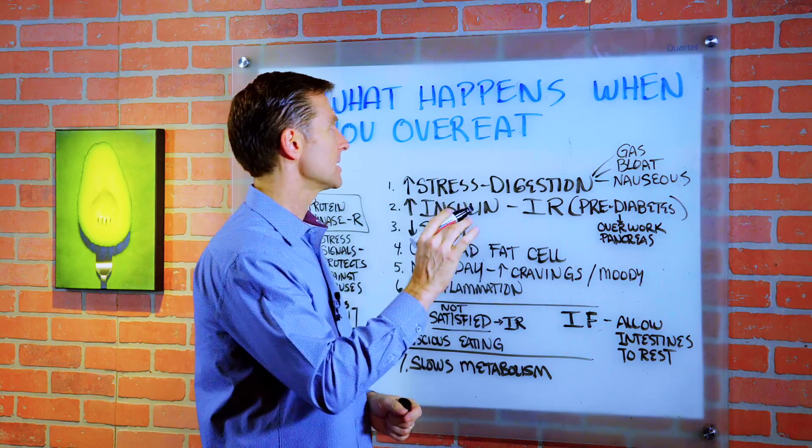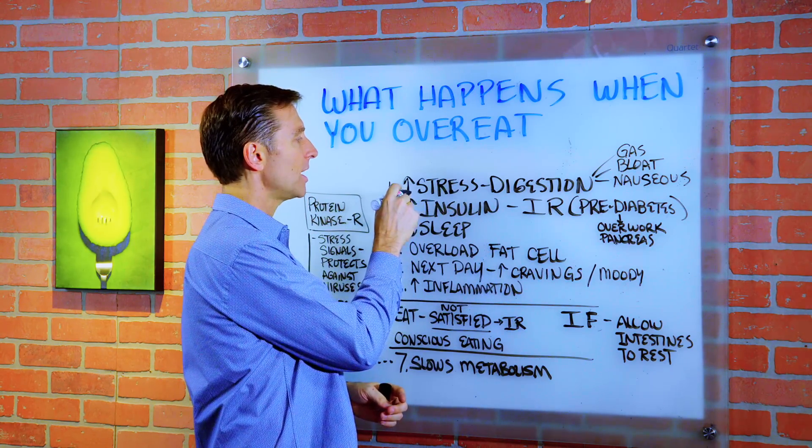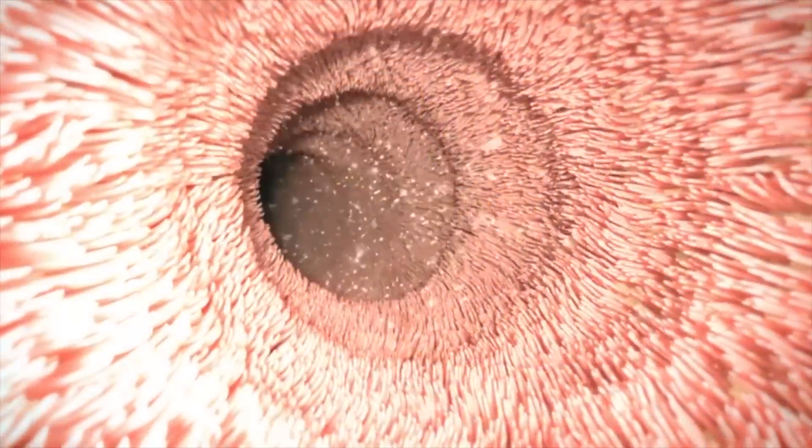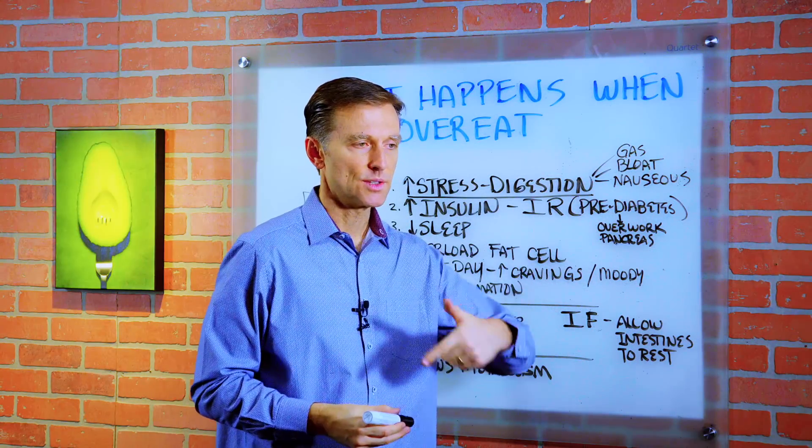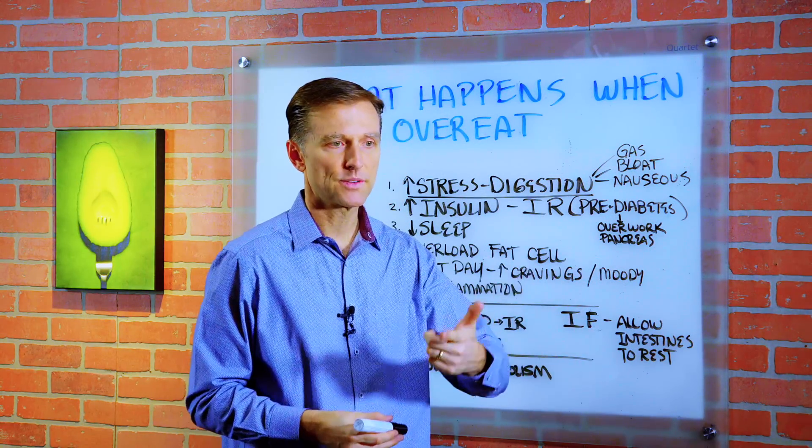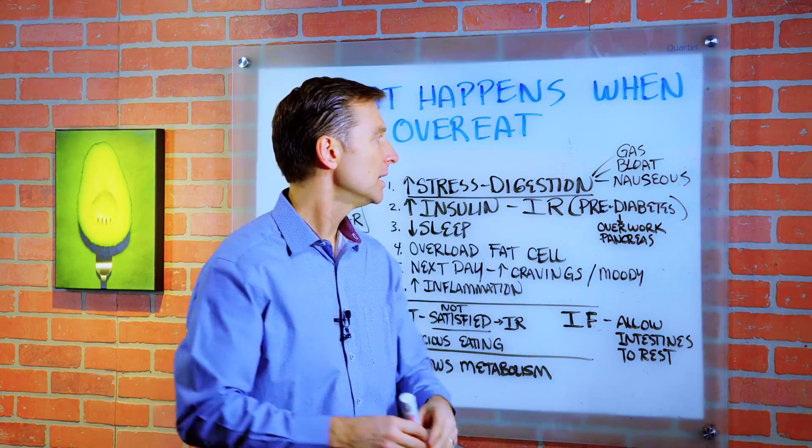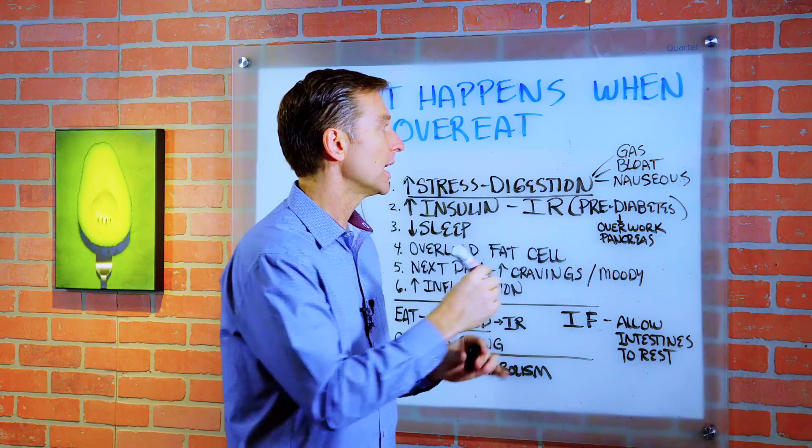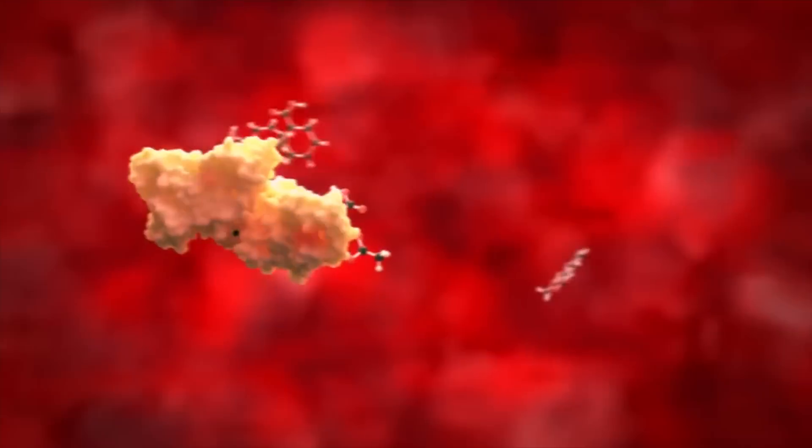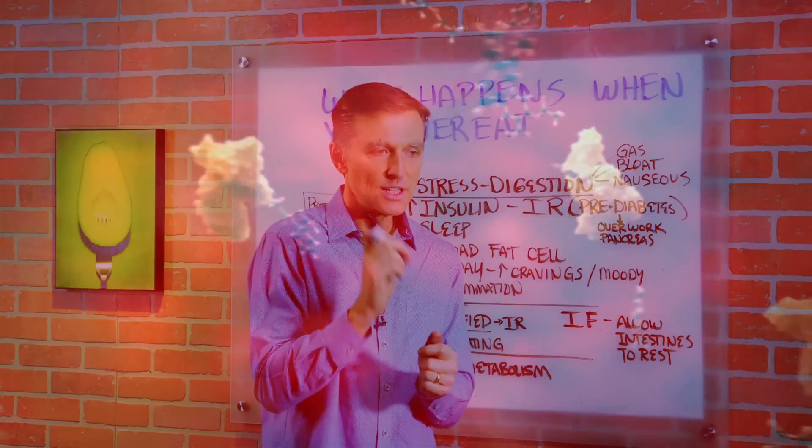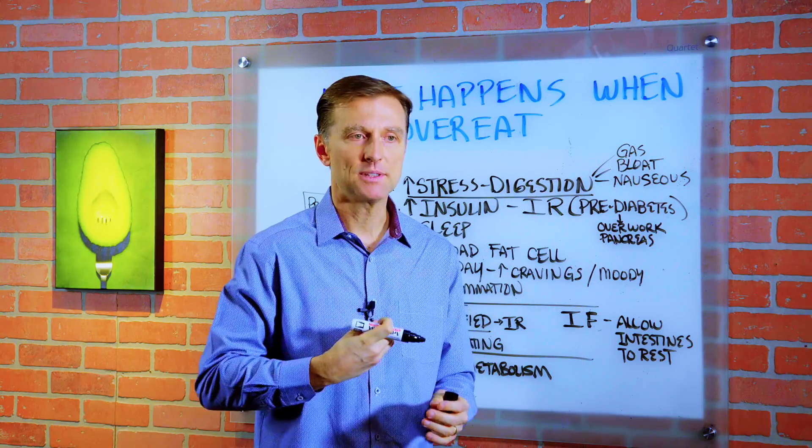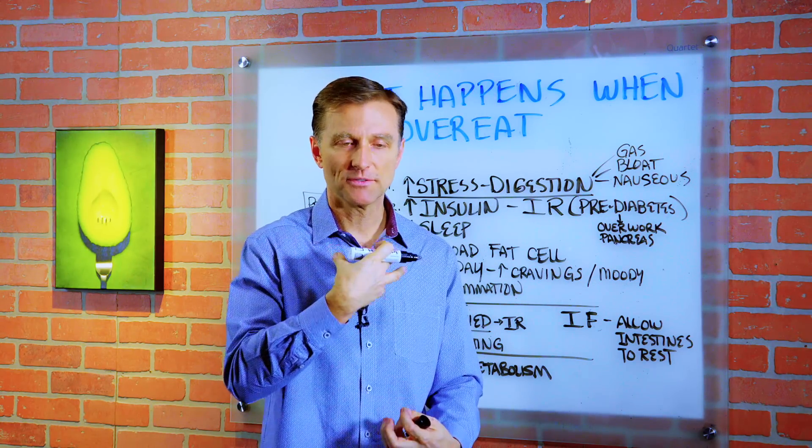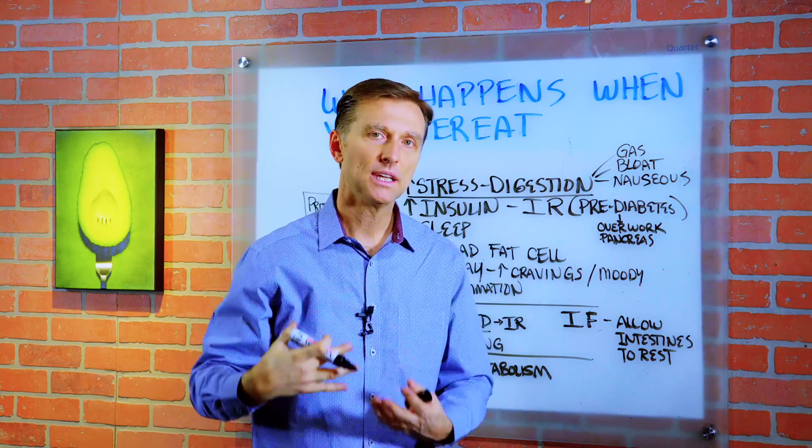So let's take a look at some of the things that can happen when you overeat. Number one, you're just stressing your digestive system in general. You have all these different processes that are occurring with the stomach, the gallbladder, the pancreas, the small intestine, the large bowel, a lot of hormone things going on. And a lot of these processes are never completed. It's always incomplete because there's never a time where that pipe is empty. It's always full. There's always food coming in.